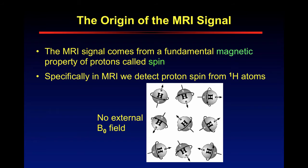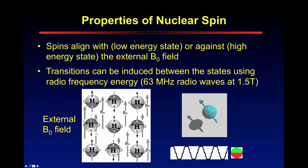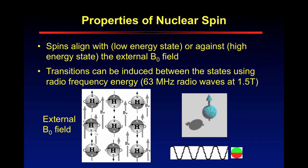Most MRI uses hydrogen protons. When there is no external magnetic field, these protons are spinning in random directions — there is absolutely no magnetic moment. However, when you apply an external magnetic field, denoted by B0, they align in a low-energy state or against a high-energy state of the external B0 field. So now all of these are aligned, and because they are all aligned, you can start to detect these magnetic moments.